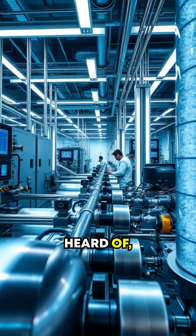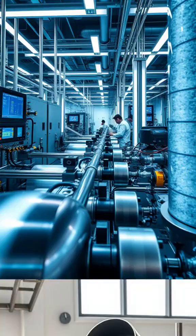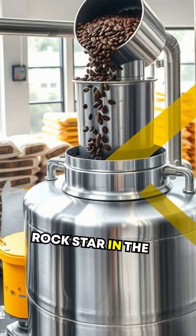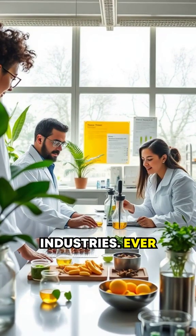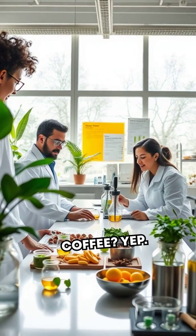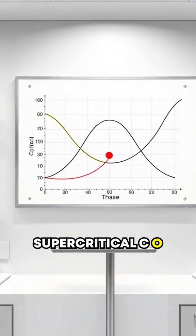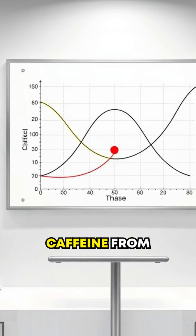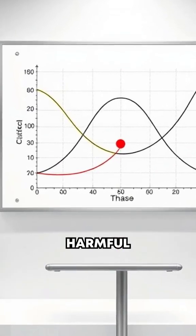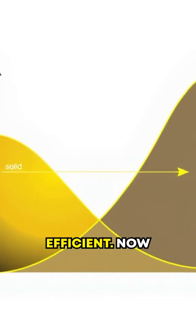Here's an example you might have heard of. Supercritical carbon dioxide. This stuff is a rock star in the tech and food industries. Ever had decaffeinated coffee? Yep, supercritical CO2 is often used to extract caffeine from coffee beans without using harmful solvents. It's eco-friendly and really efficient.